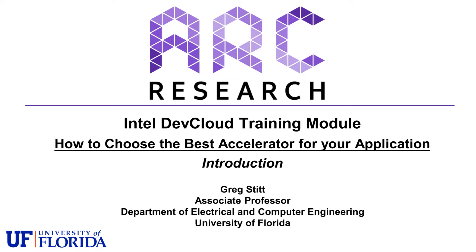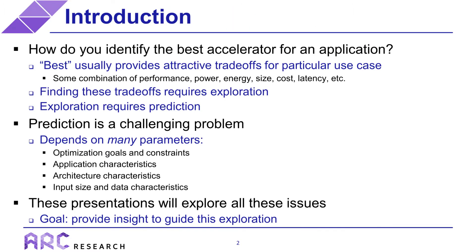This is a very complicated question to answer. Unfortunately, you won't have an exact answer by the end of the training, but I will cover a wide range of relevant considerations that will help guide you. Our goal is to figure out how to identify the best accelerator for an application. There really isn't such a thing as a best accelerator — there are usually a set of tradeoffs between performance, power, cost, size, latency, and various other metrics. What we are looking for is the best accelerator for a specific use case. For example, the best accelerator for an embedded convolutional neural net is almost certainly going to be different than for a supercomputer.